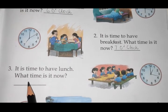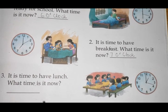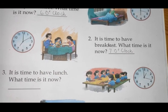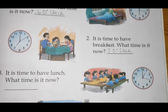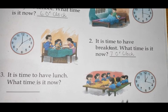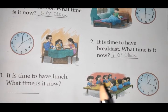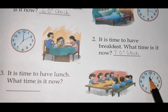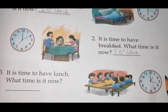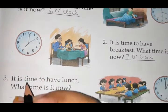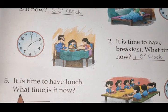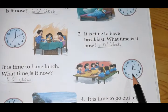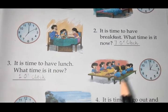The third one: it is time to have lunch. What time is it now? As you all know, we take lunch in the afternoon, so the time must be somewhere in the afternoon. Let us look at the clock. Here the hour hand is at 1 and the minute hand is at 12, so what would be the time? The time would be 1 o'clock. You have to write here 1 o'clock.